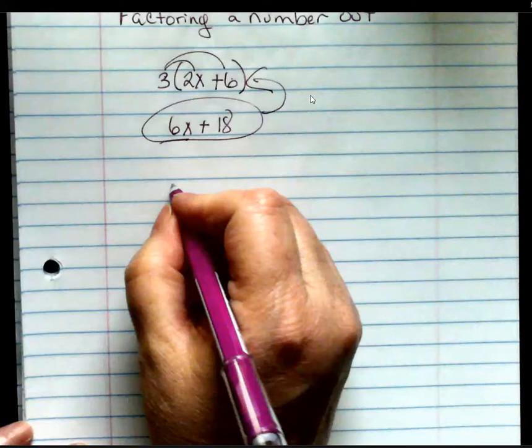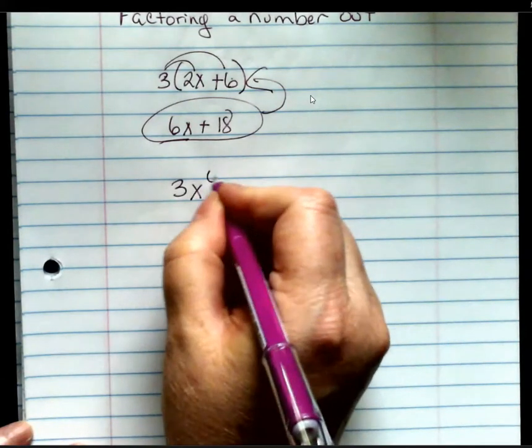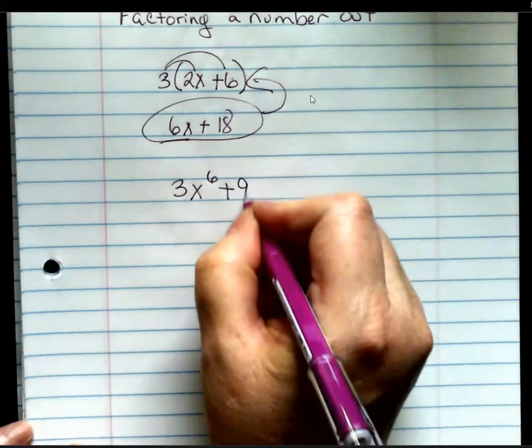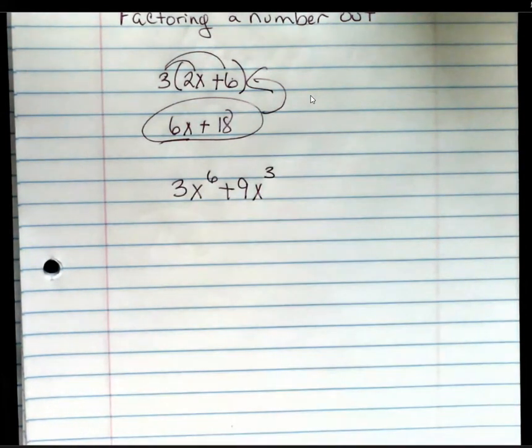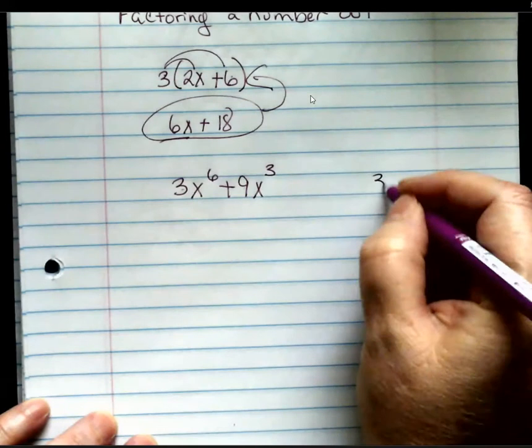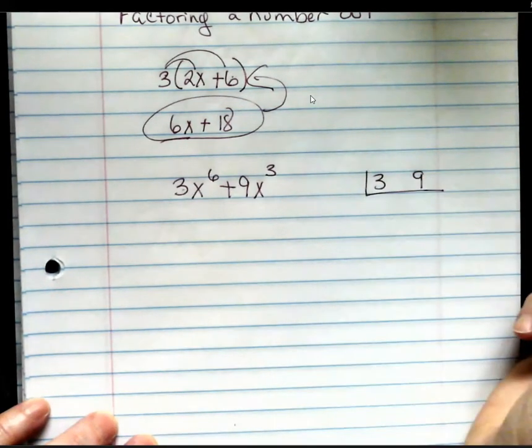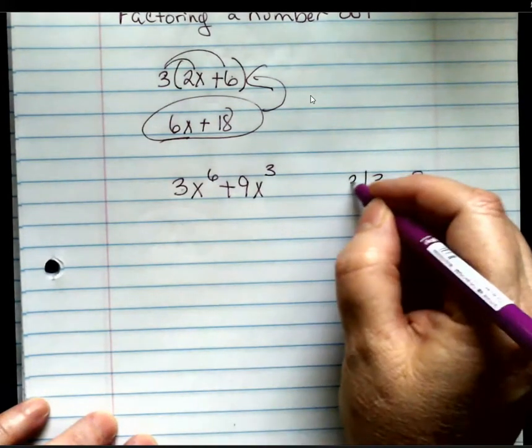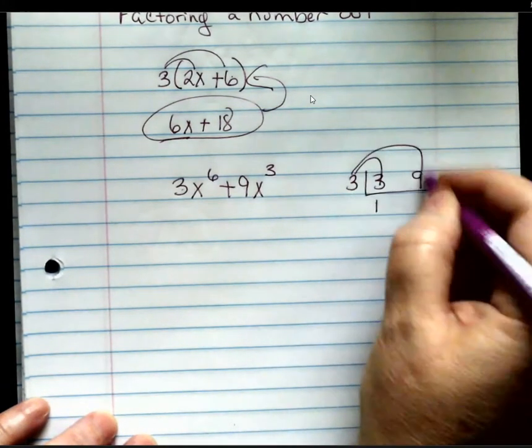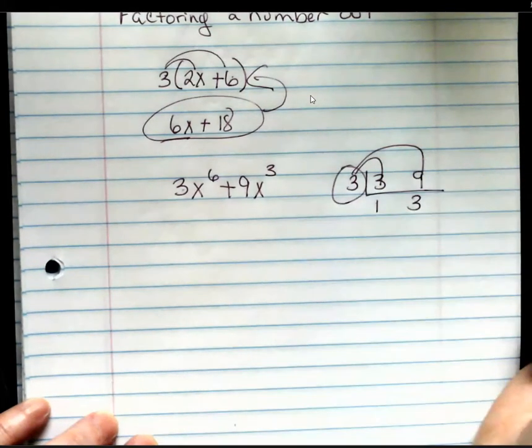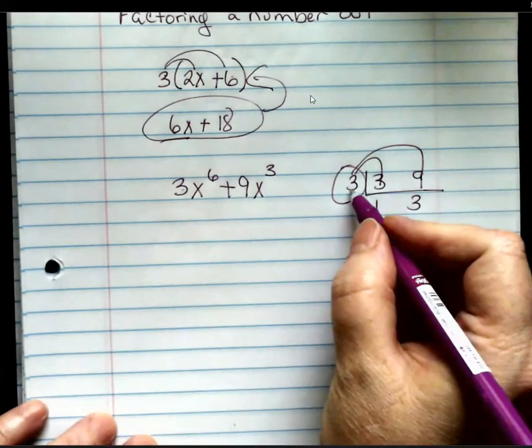So let's take a look at this number. 3x to the 6th plus 9x cubed. Now, we need to find the greatest common factor, just like we did at the other problems. 3 and 9. What's a number that will go into both 3 and 9? 3, giving me 1 and 3. So I know that 3 is my number.